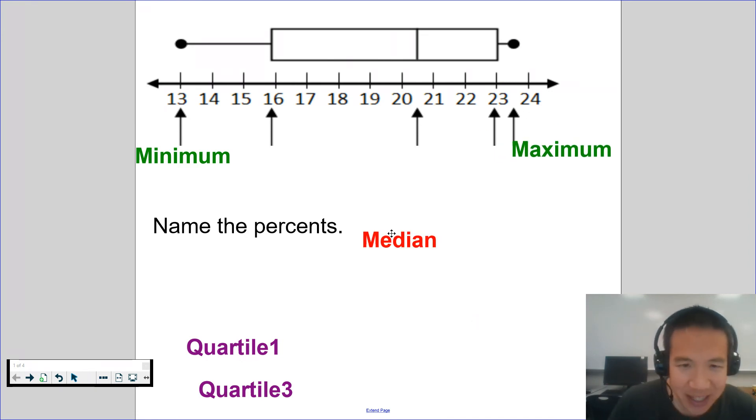Median means the middle. So there are five arrows. One, two, three, four, five. So the median must be right here.